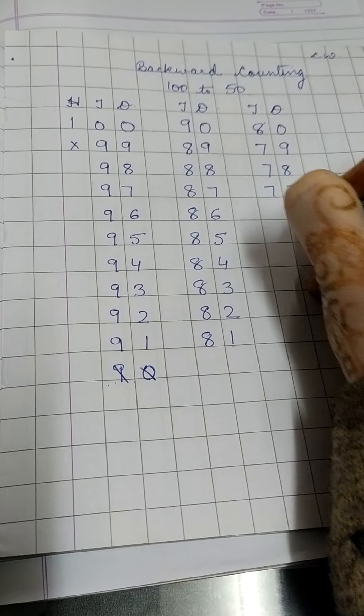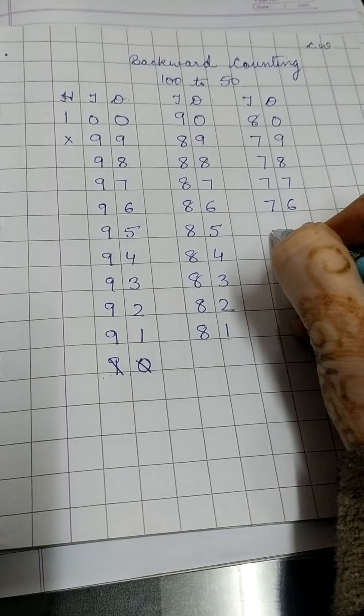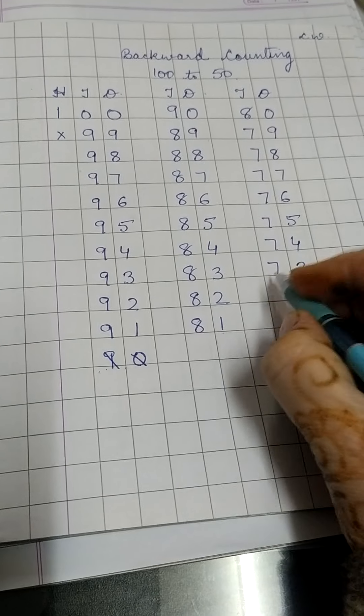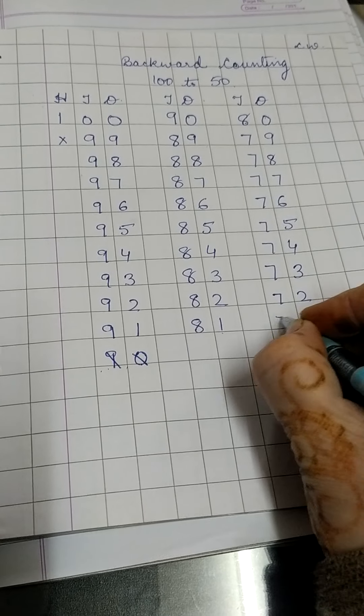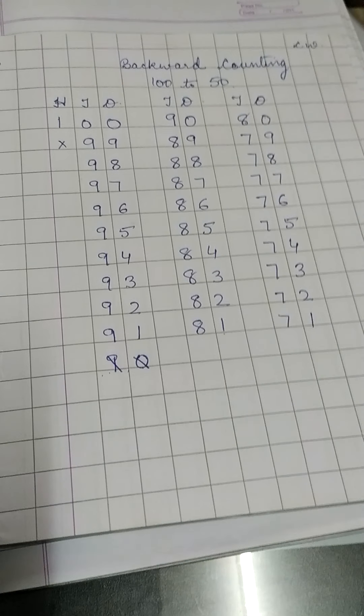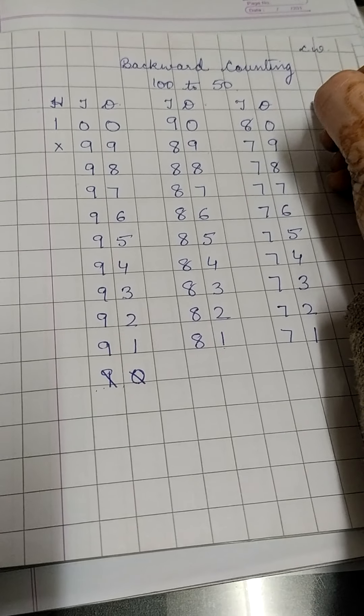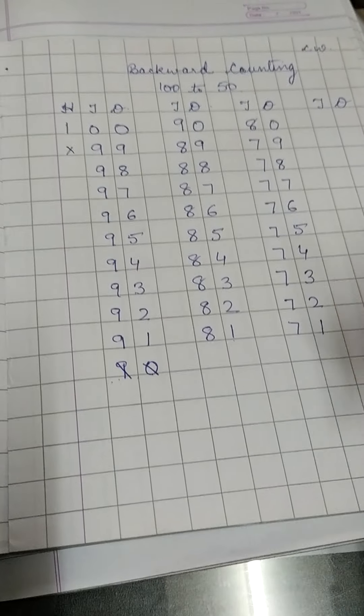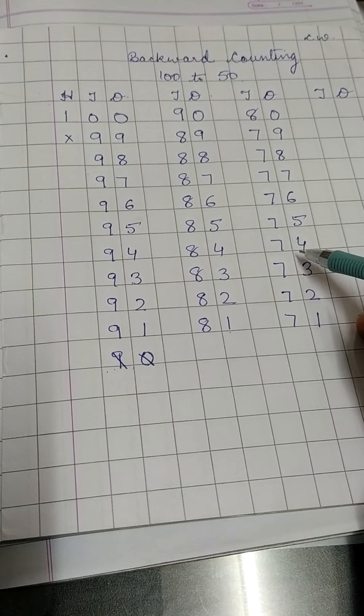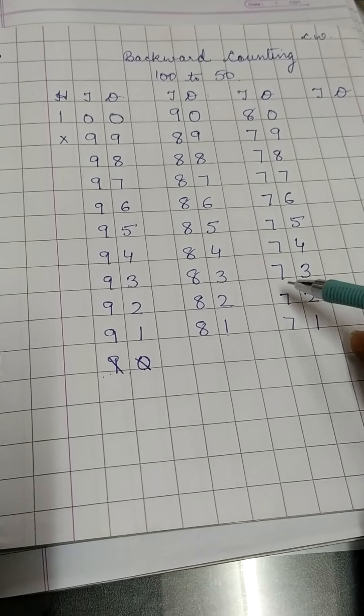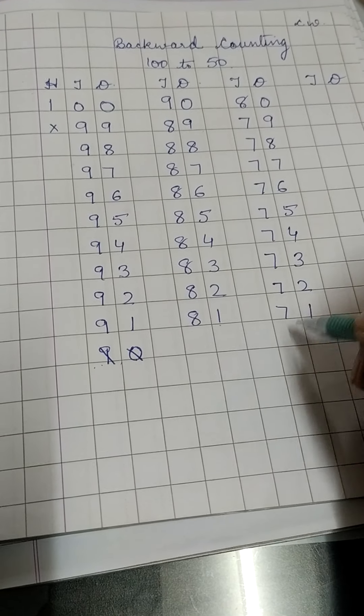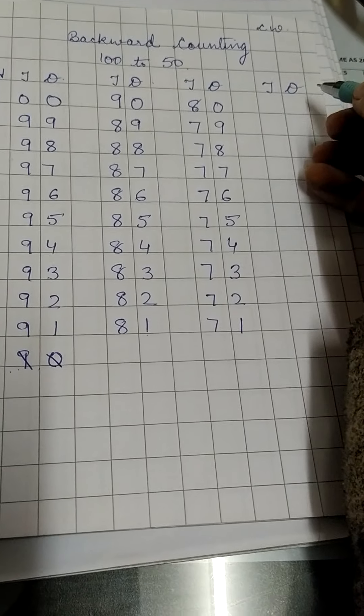79, 78, 77, 76, 75, 74, 73, 72, 71. After 71, again in the next line, leave one line in between. And make sure that you always touch the base line. Your handwriting will be nice if you touch the base line. Now after 71.